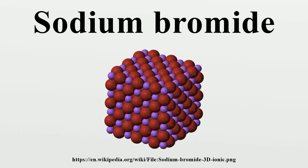NaBr is produced by treating sodium hydroxide with hydrogen bromide. Sodium bromide can be used as a source of the chemical element bromine. This can be accomplished by treating an aqueous solution of NaBr with chlorine gas: 2 NaBr + Cl₂ → Br₂ + 2 NaCl.